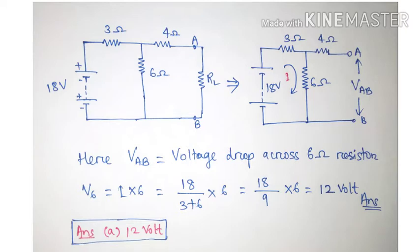I equals voltage divided by resistance, which is 18 volts divided by (3 plus 6). So I equals 18 divided by 9, and V6 equals (18/9) into 6, which gives 12 volts. Option A is the correct answer.